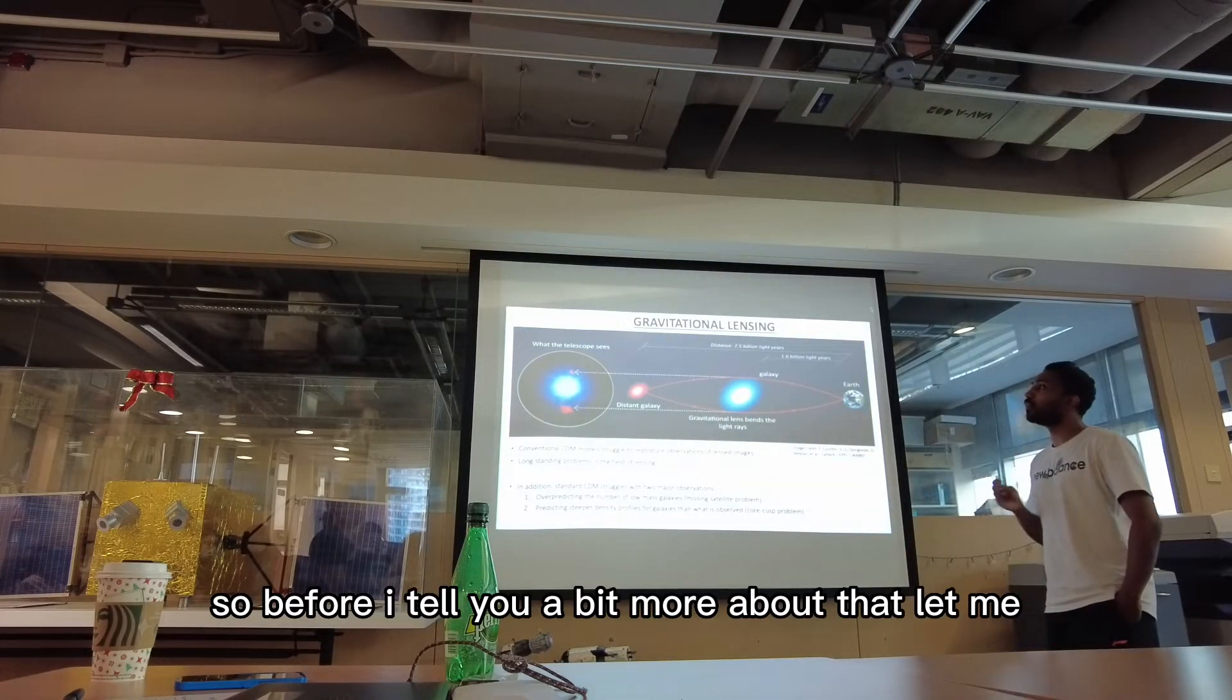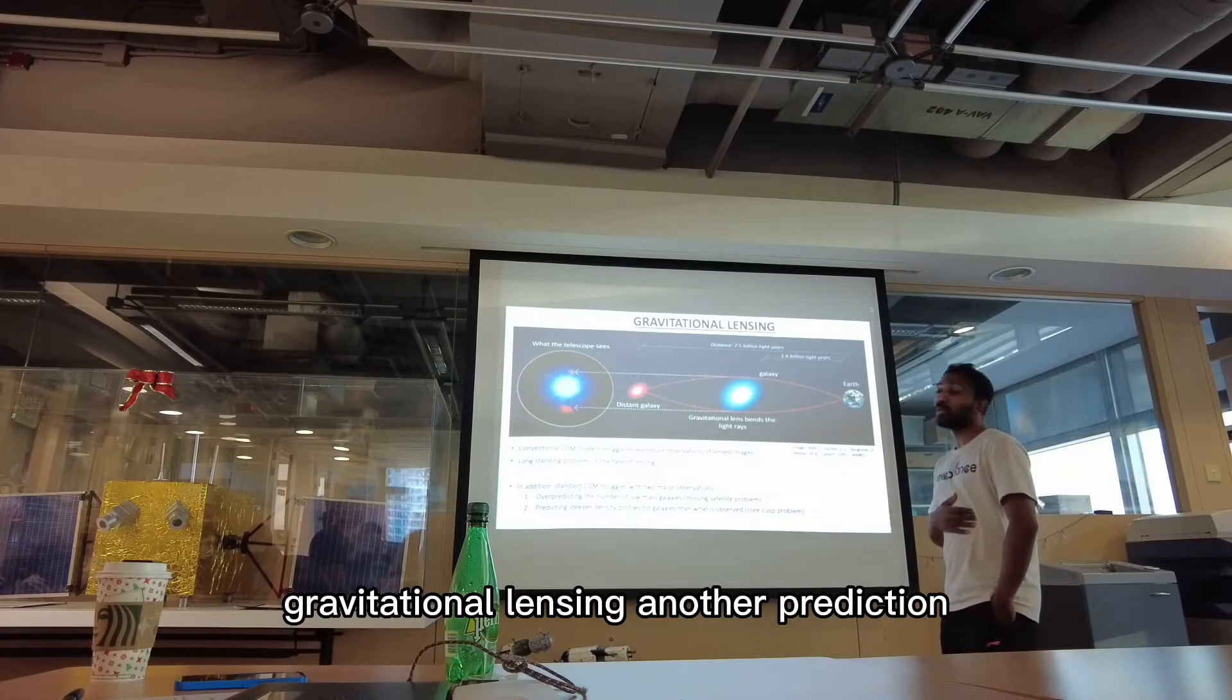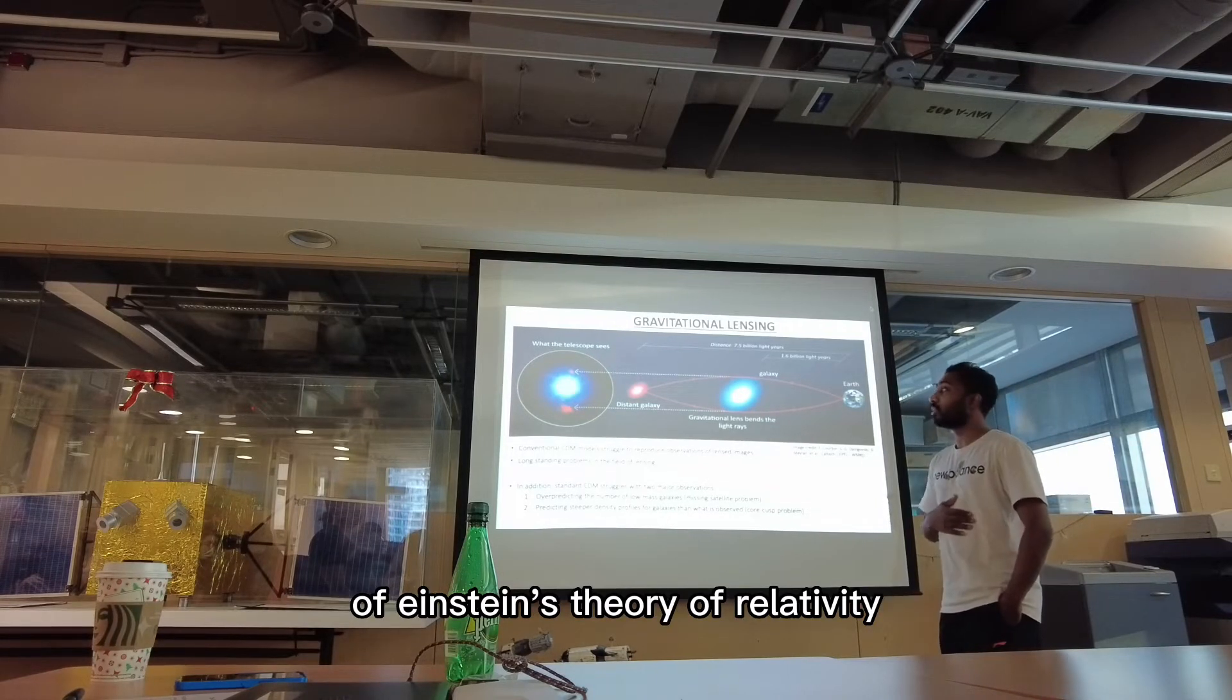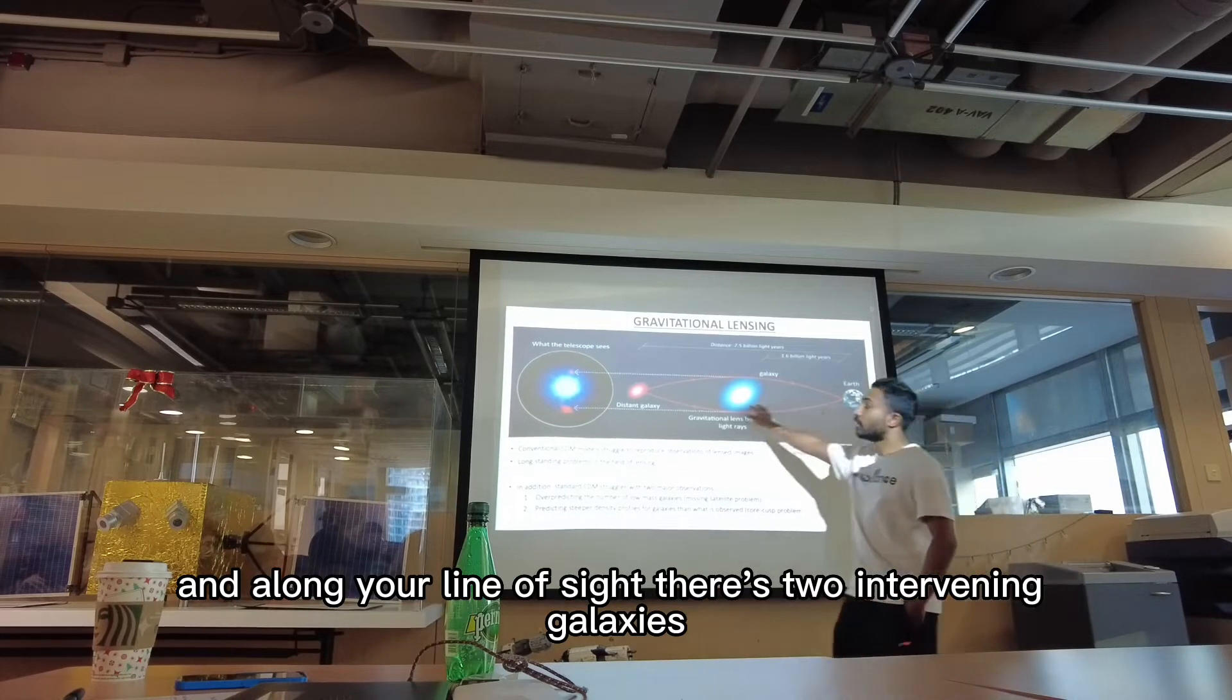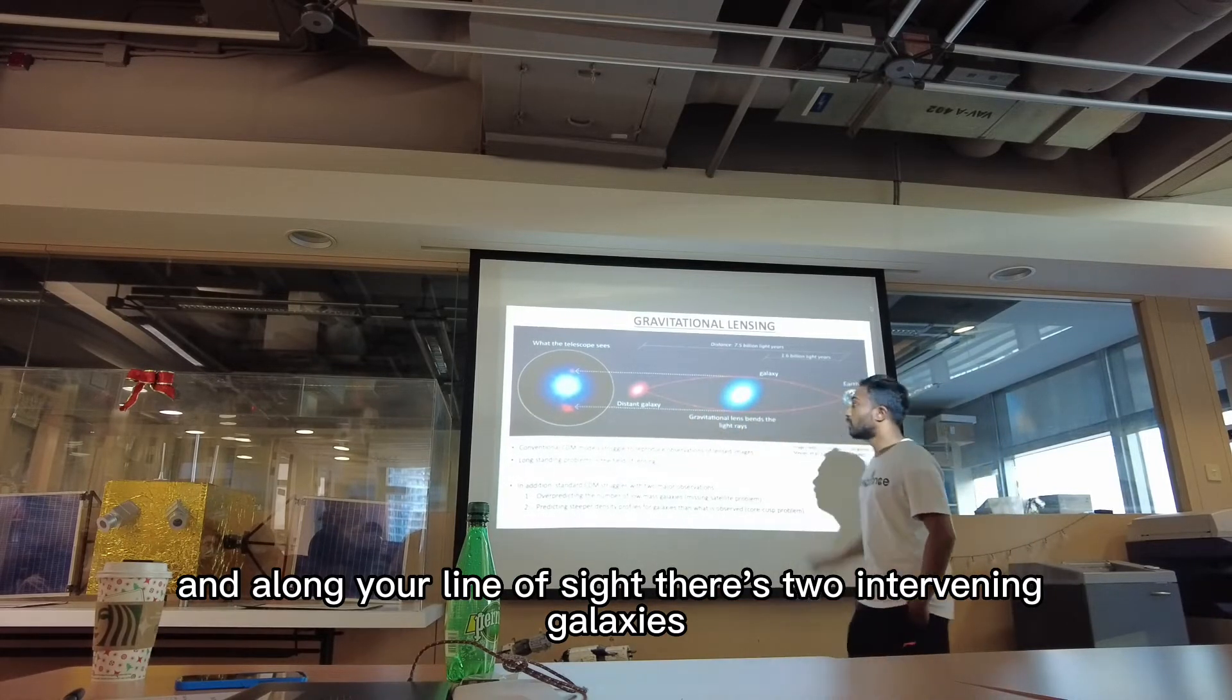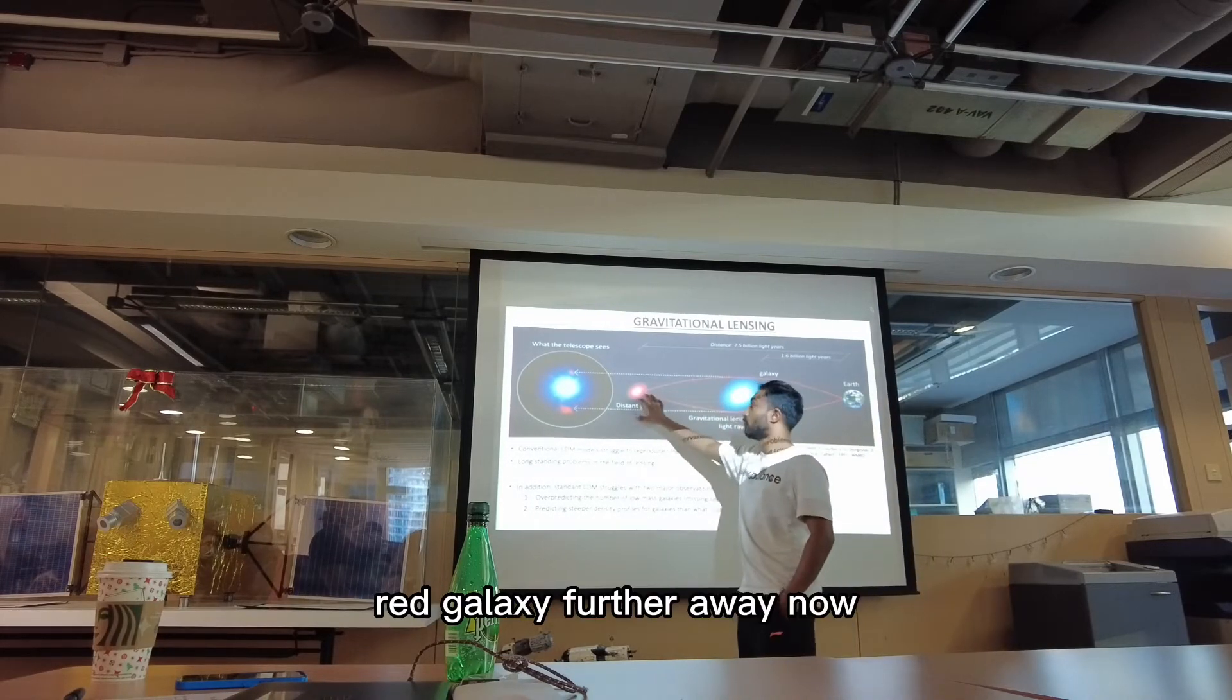So before I tell you a bit more about that, let me talk to you about gravitational lensing, another prediction of Einstein's theory of relativity. So let's say we're here on Earth, and along your line of sight there's two intervening galaxies: a blue galaxy here and a much further red galaxy further away.